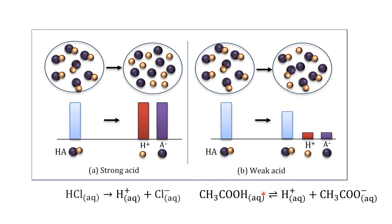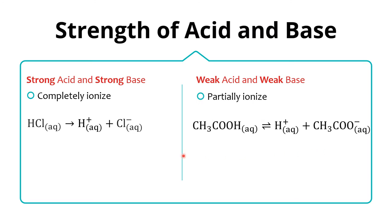This is why we use the double arrow to represent equilibrium for weak acids — because only partial ionization occurs, the products can also recombine to bring back the reactants. This is a reversible reaction. In the next lesson we will calculate the value of the equilibrium constant, and we will learn that it is quite small.